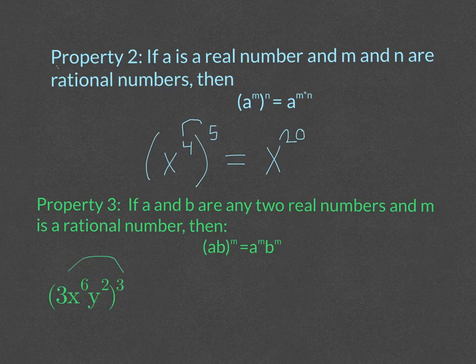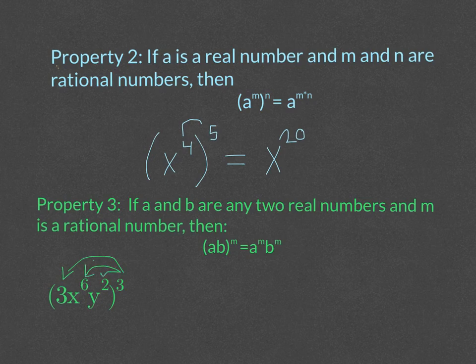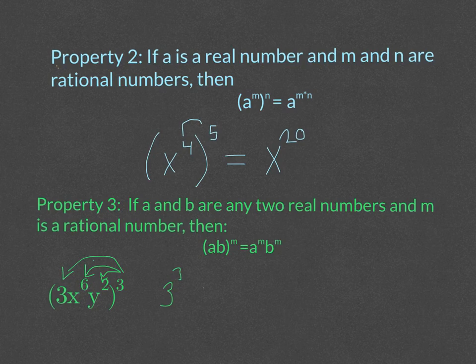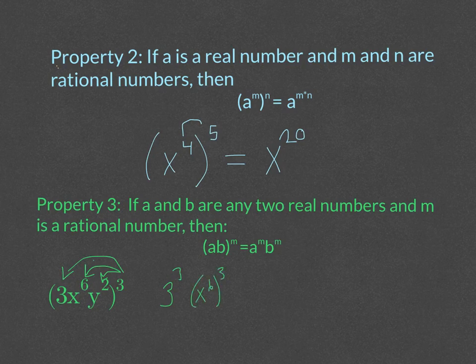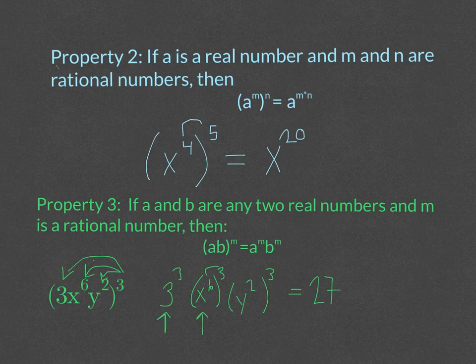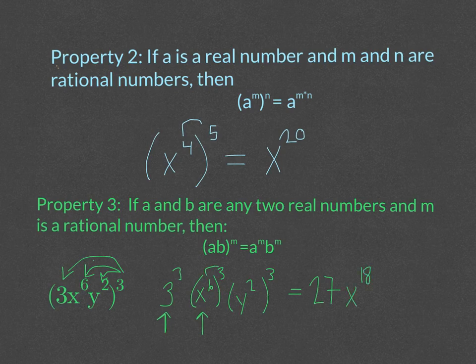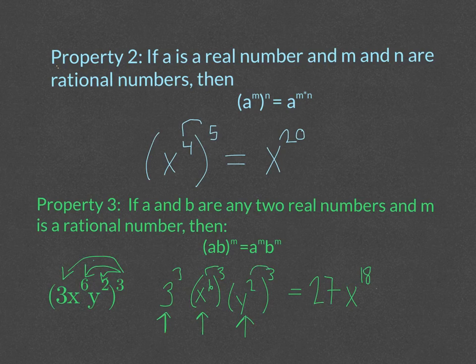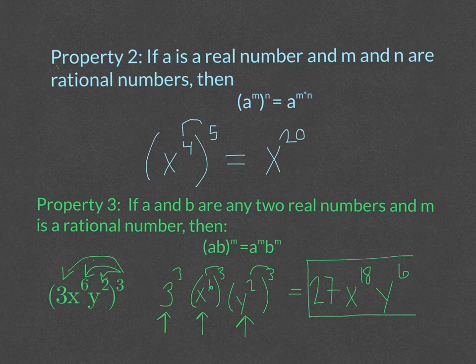So this problem says three times x to the sixth times y to the second all to the third power. So according to property three, we need to distribute that three to each group of this problem. So we would have three to the third, x to the sixth to the third, and y squared to the third. Because this is like three to the first, this part right here, it's three to the first to the third, and it's a constant, we just take three to the third power directly. So three to the third power would be 27. The next part of the problem is the x group. So I have x to the sixth to the third power. And according to property two, we multiply those, so that would be x to the 18th. And then the y group here, we have y squared to the third power. So we'll multiply two times three, so that would be y to the sixth. And that is that whole term simplified.